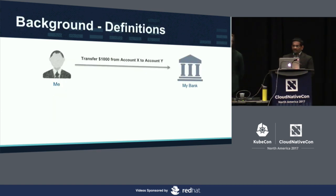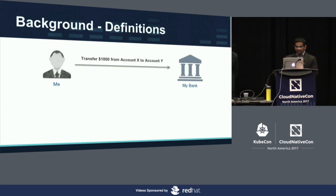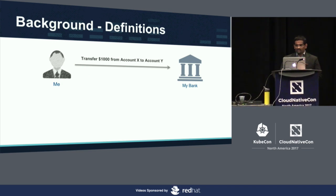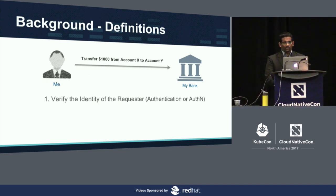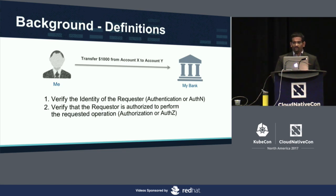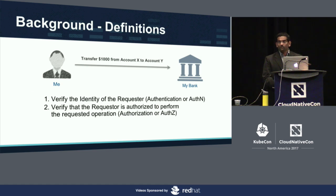Let's get started. Before we talk about the main topic, I want to get some background definitions out of the way using an example. If I'm trying to send a request to my bank to transfer $1,000 from account X to account Y, the bank is going to perform two steps. One, it will first verify the identity of the requester — that's me. That is what we call AuthN, authentication. And then verify that the requester is authorized to perform the requested operation. That's authorization, AuthZ.